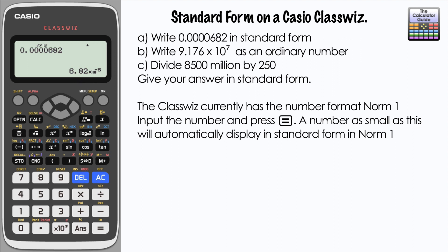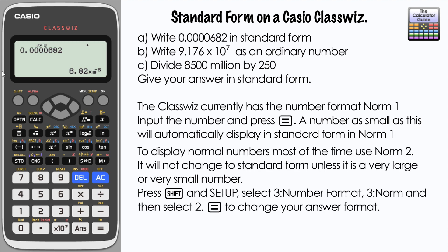The normal number format that I recommend, and how you should really have your calculator most of the time unless you're working with standard form, is norm 2. To set it: shift, set up, 3 for number format, 3 for norm, and then 2 for norm 2.